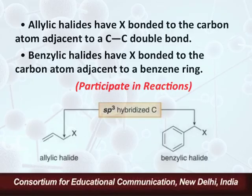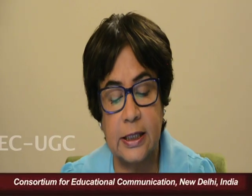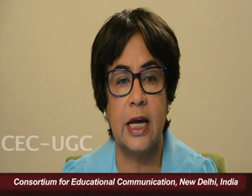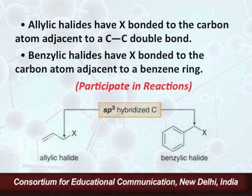The next category of organic halides are allylic halides and benzylic halides. In allylic halides, the halogen atom is bonded to a carbon adjacent to a C-C double bond. Similarly, in benzylic halides, the halogen is bonded to a carbon adjacent to the benzene ring. In both cases, the halogen is attached to an sp3 hybridized carbon which is in turn attached to an sp2 hybridized carbon, making these compounds quite reactive towards nucleophilic substitution reactions.